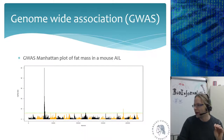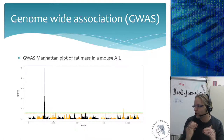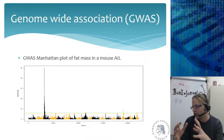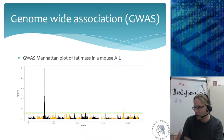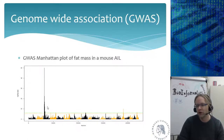Here is a GWAS we did in a mouse advanced intercross line (AIL). An AIL is made by taking the F2 and then randomly mating every generation. We did this for 28 generations, accumulating far more recombinations than in the first two generations. You go from having a broad QTL structure with good power to a narrower peak. The peak on chromosome 3 here is much smaller than what was seen in the F2 population, reflecting improved resolution.